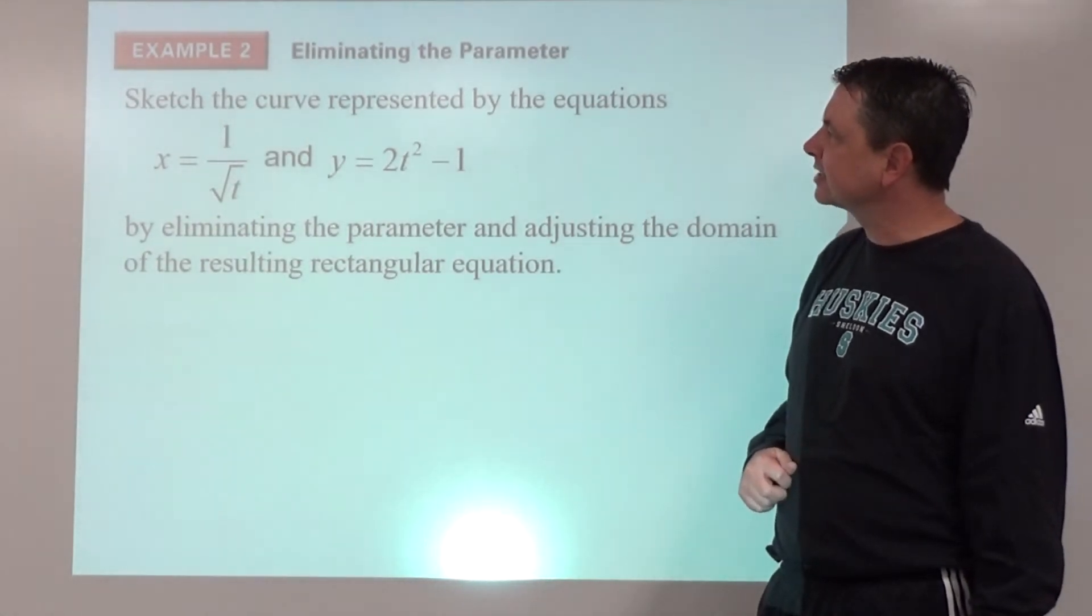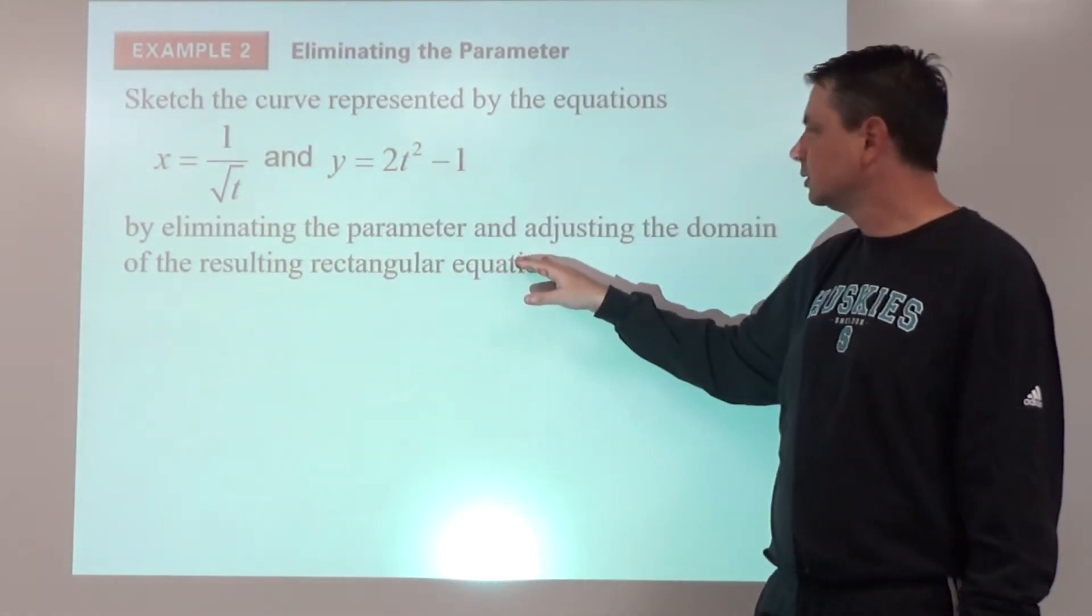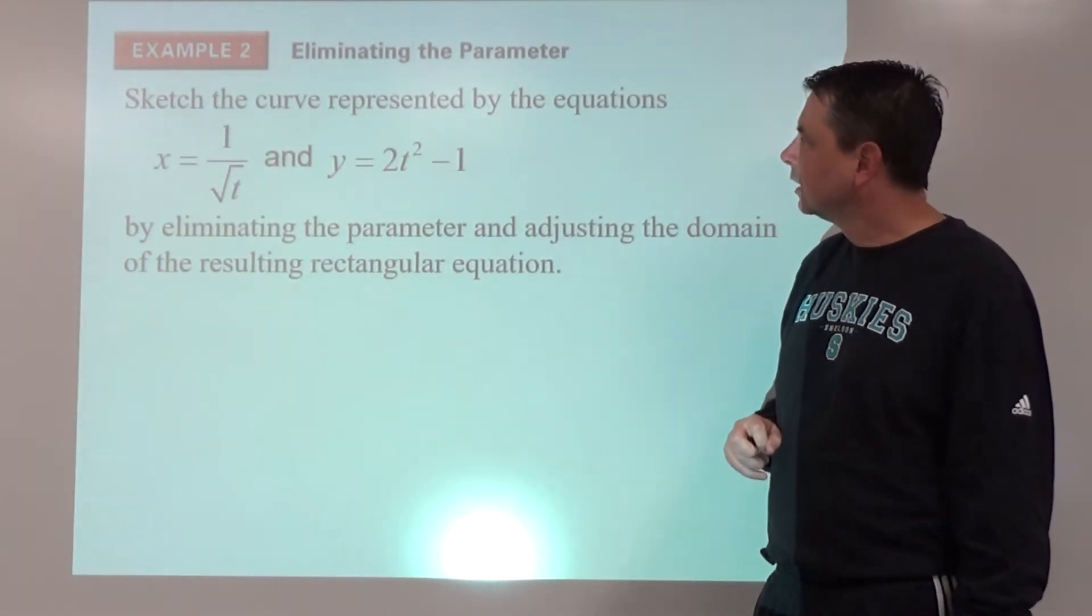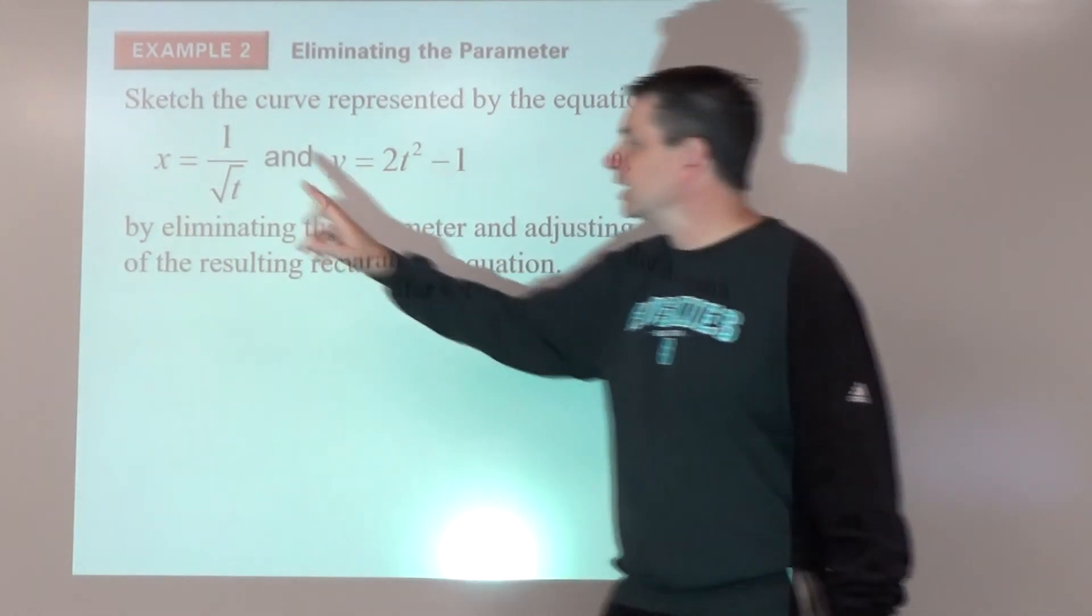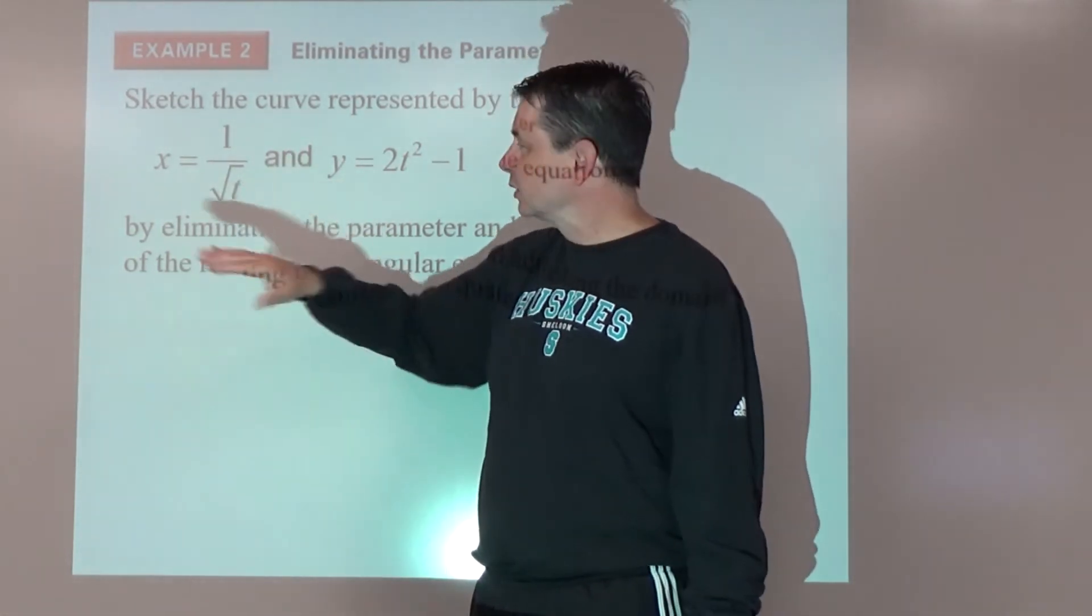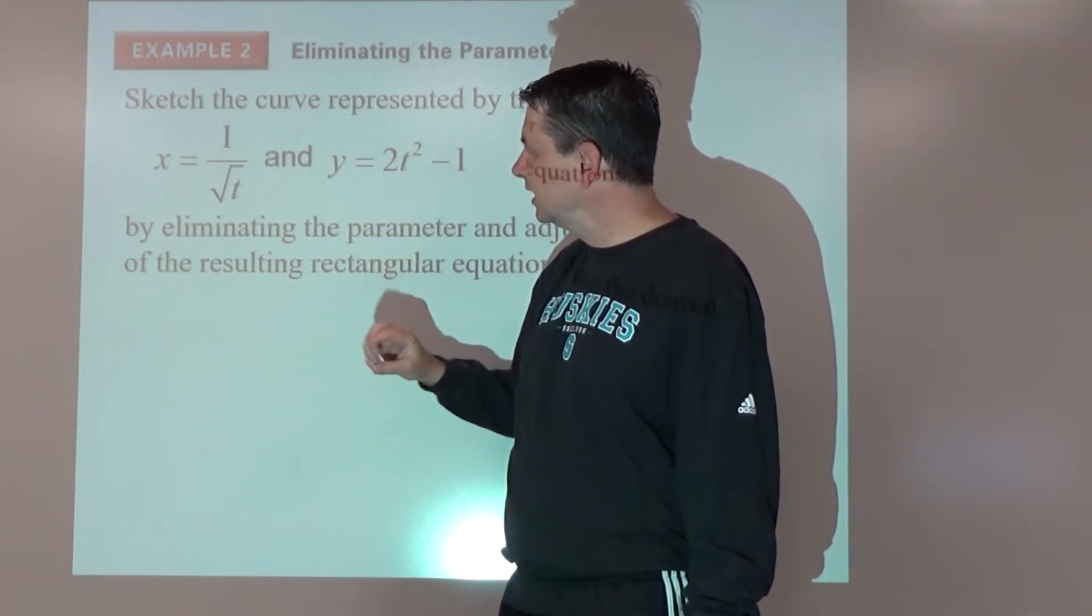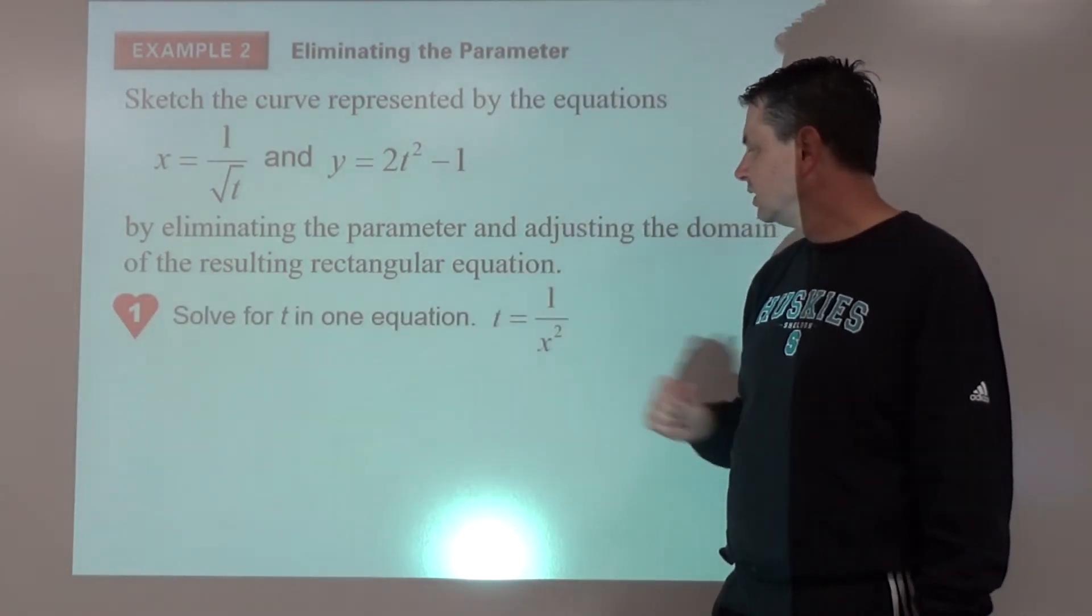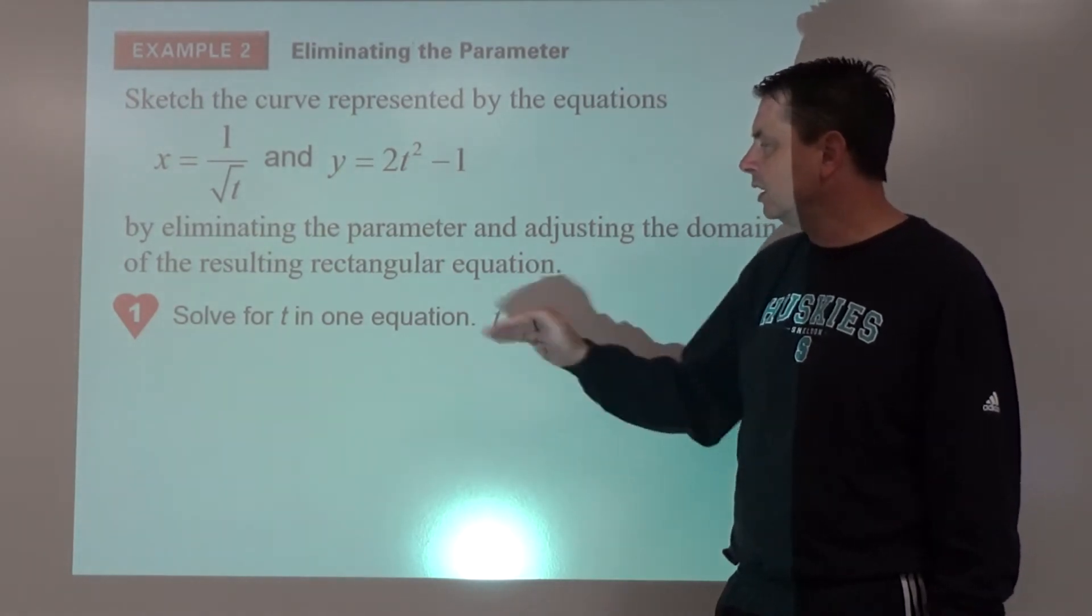Example number two: sketch the curve represented by the equations by eliminating the parameter, adjusting the domain of the resulting rectangular equation. We want to solve one of these for t. I think we may want to go with this one. If we squared everything, so x² = 1/t, and then took the reciprocal on both sides, we would get t = 1/x². So that's step one. We solve for t. Now we're going to substitute it into the other equation, replace our t with 1/x².